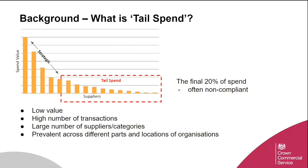Defining exactly what falls within the parameters of tailspend is quite tricky, as it is unique to individual organisations. For CCS's proposed tailspend solution, we are providing a new route to market for this kind of spend — this is not about facilitating other CCS frameworks — and we're focusing on goods only to keep things as simple as possible, though naturally tailspend in general does include a lot of services as well.